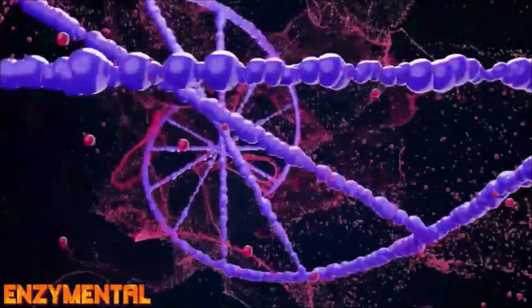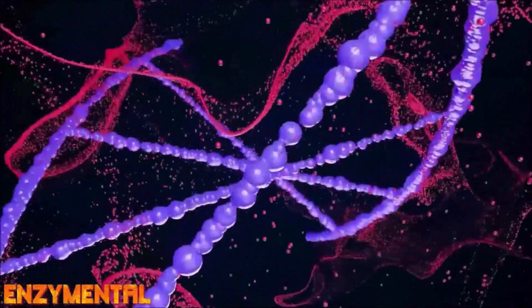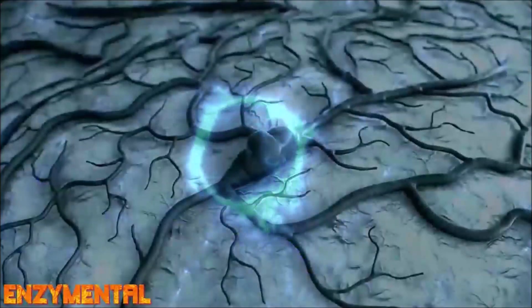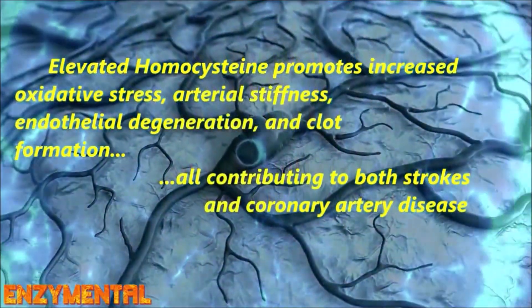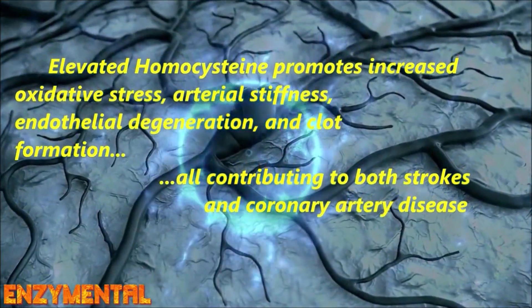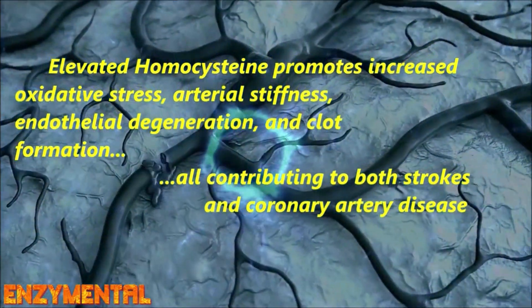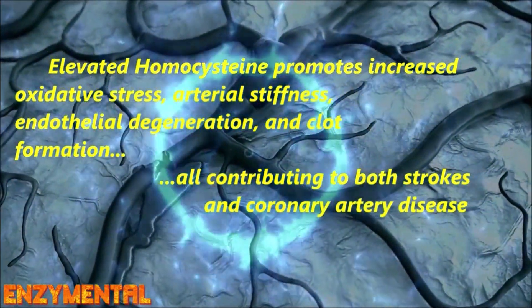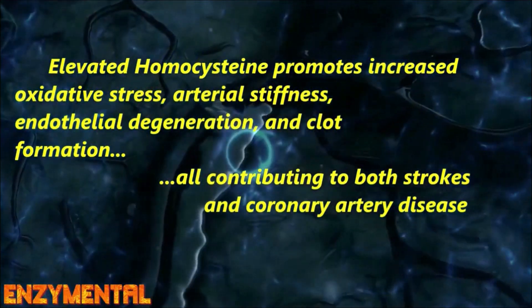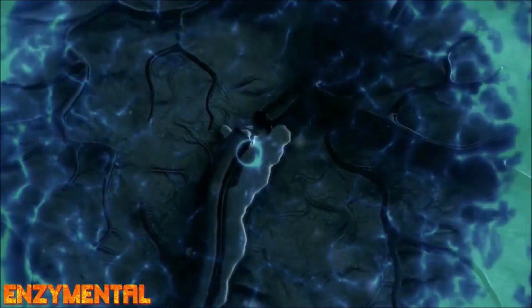A coenzymated B complex includes B6, B12, and folate — the three specific B vitamins that break down homocysteine, which can otherwise contribute heavily to well-known age-related conditions like dementia, strokes, and cardiovascular disease. Regular intake of taurine also reduces homocysteine, so that's just one more reason why you should make taurine a daily part of your life.